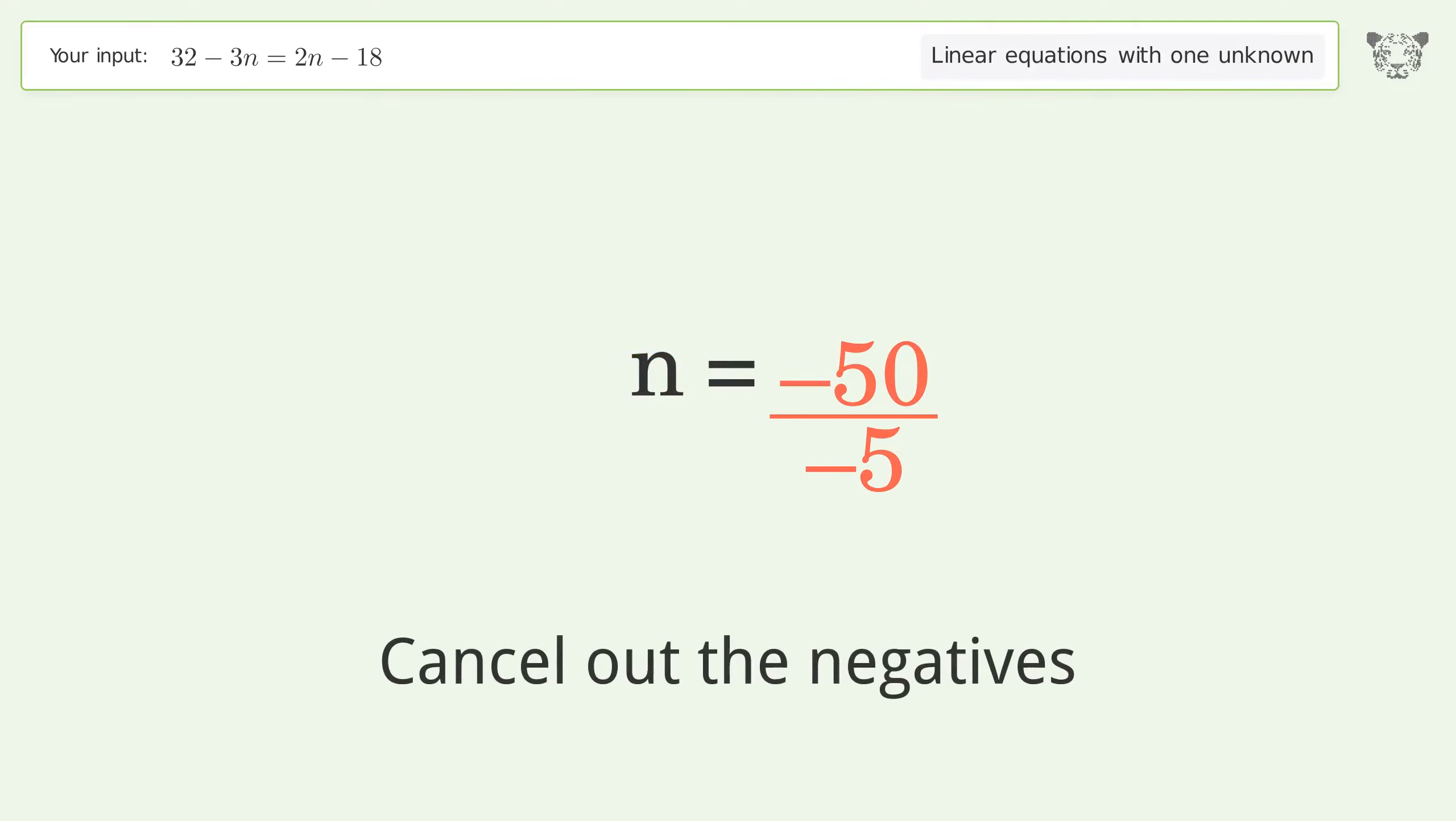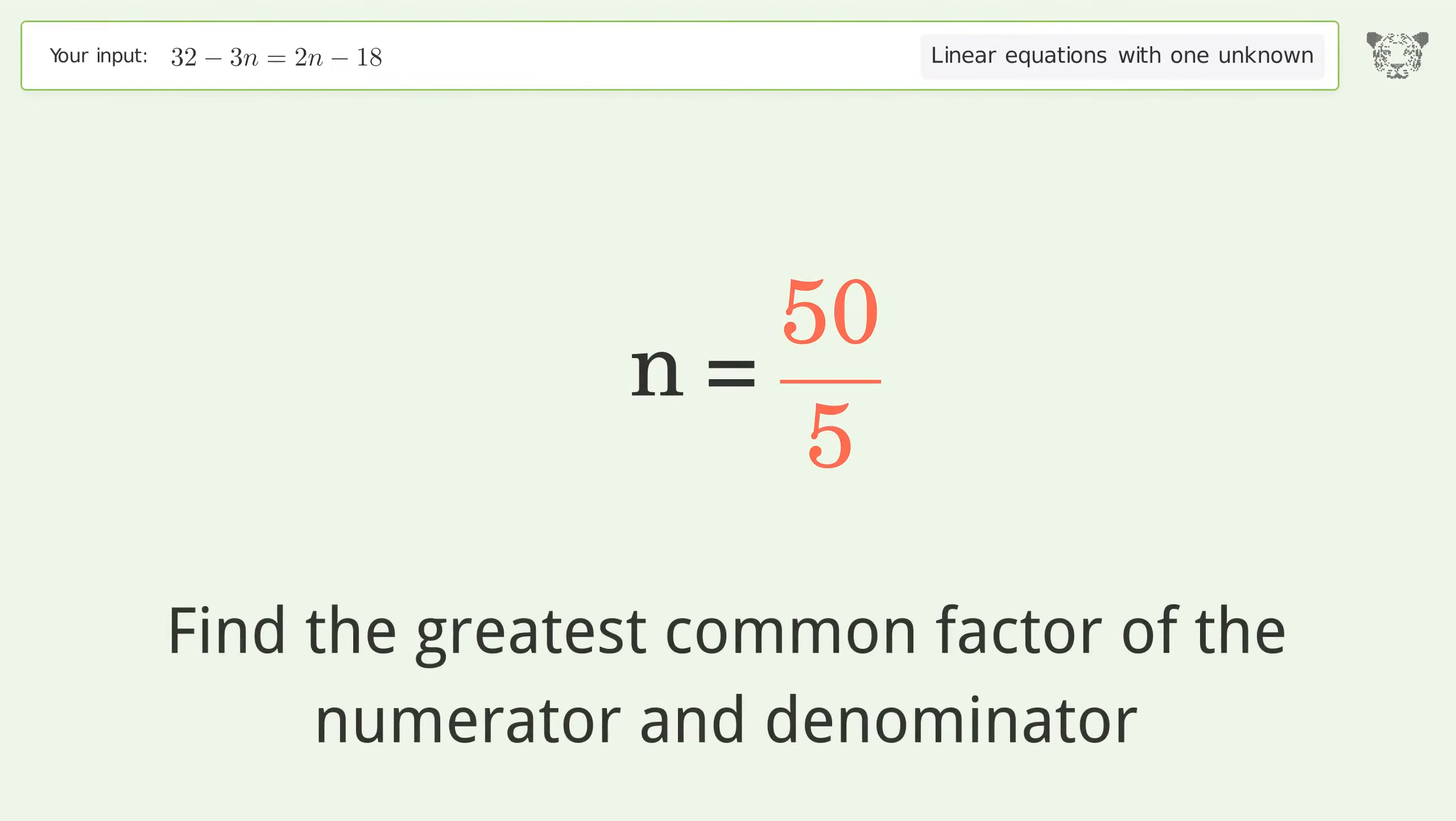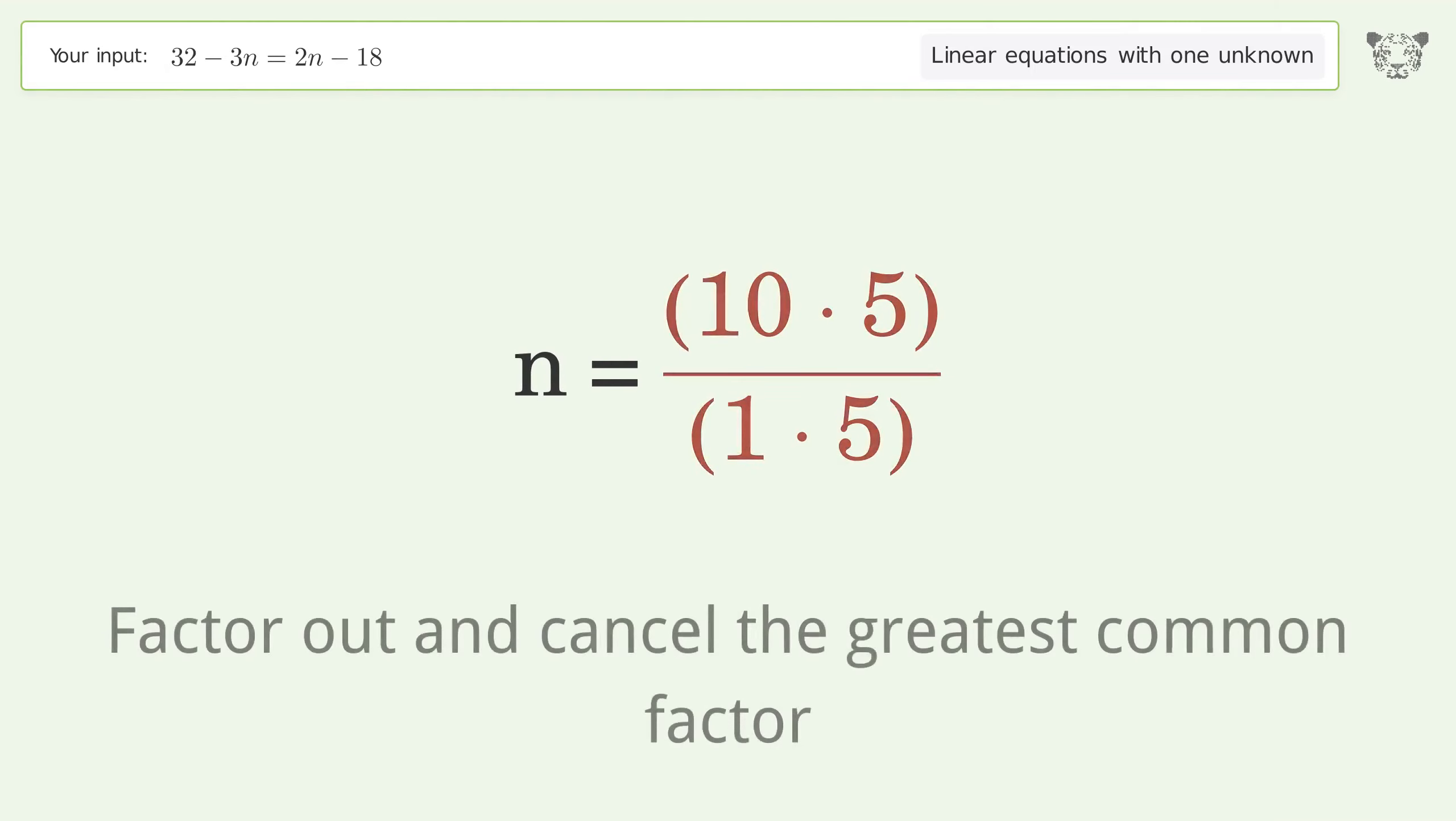Cancel out the negatives. Find the greatest common factor of the numerator and denominator. Factor out and cancel the greatest common factor.